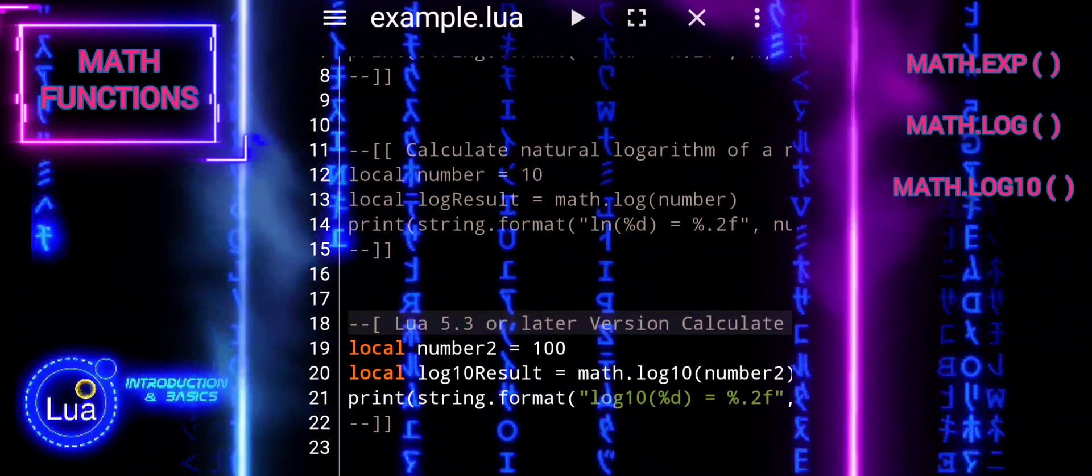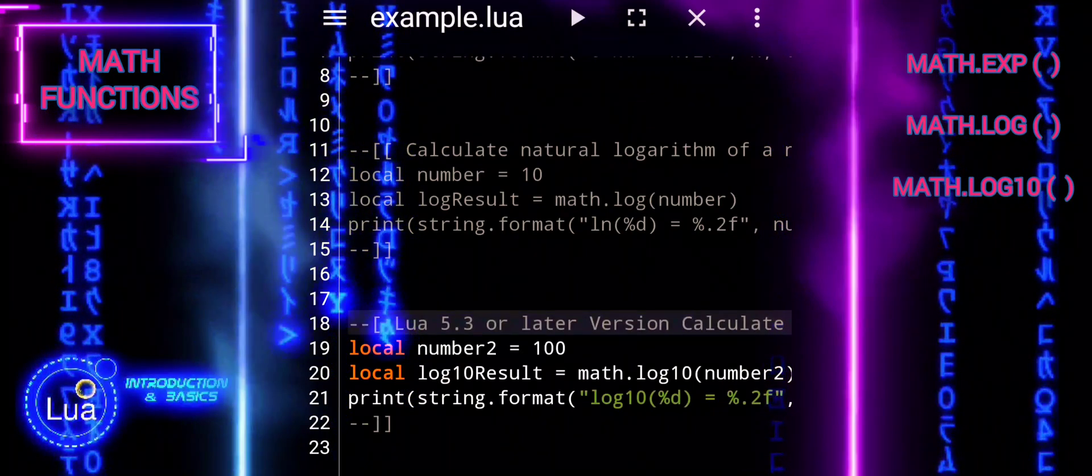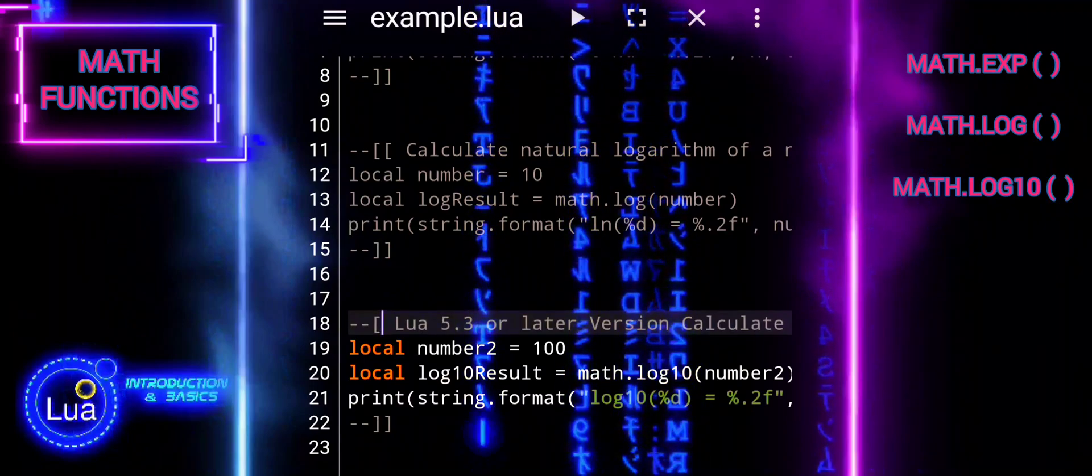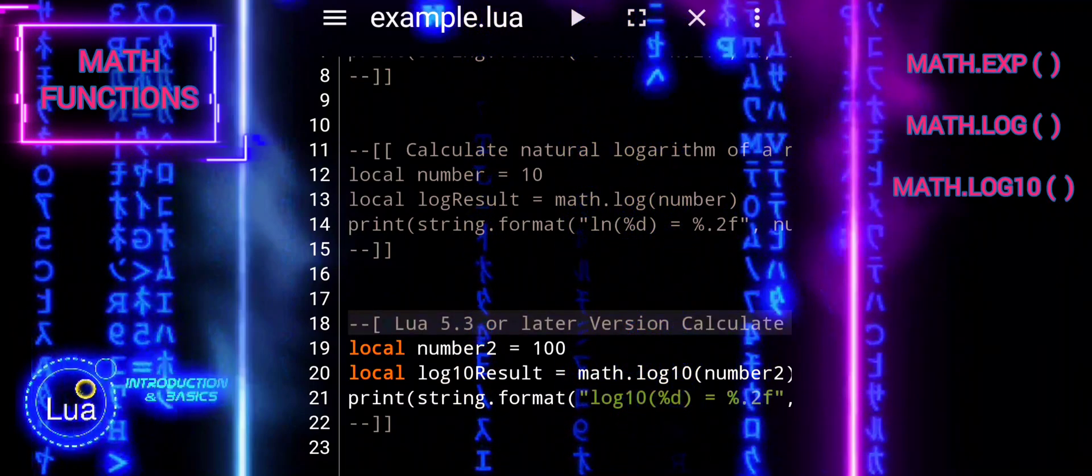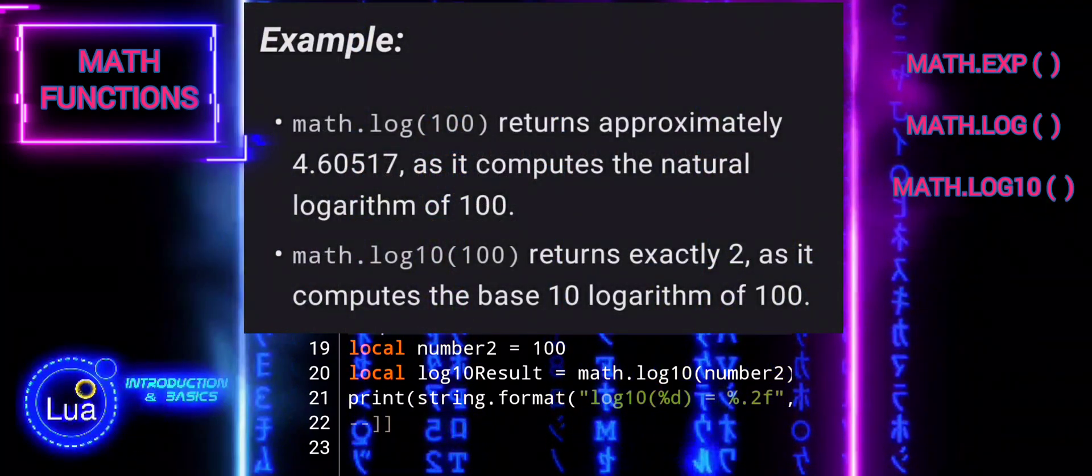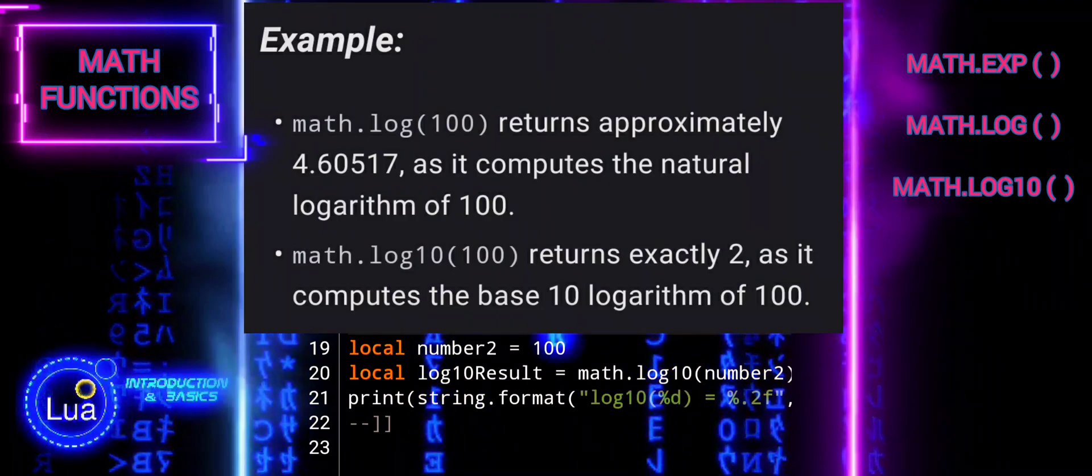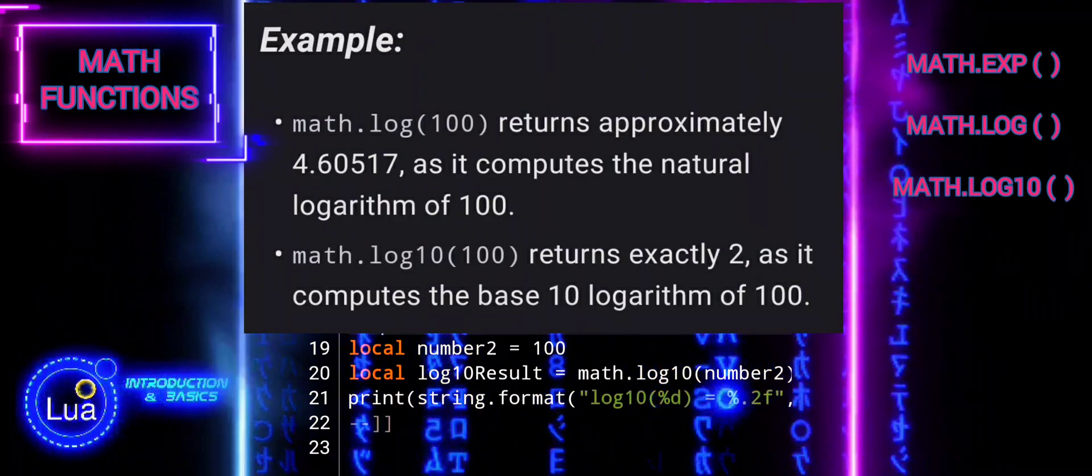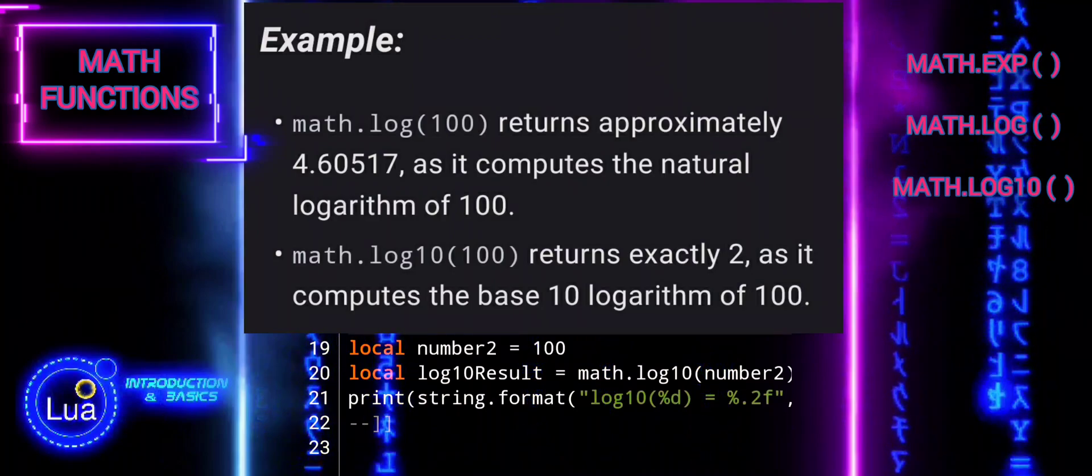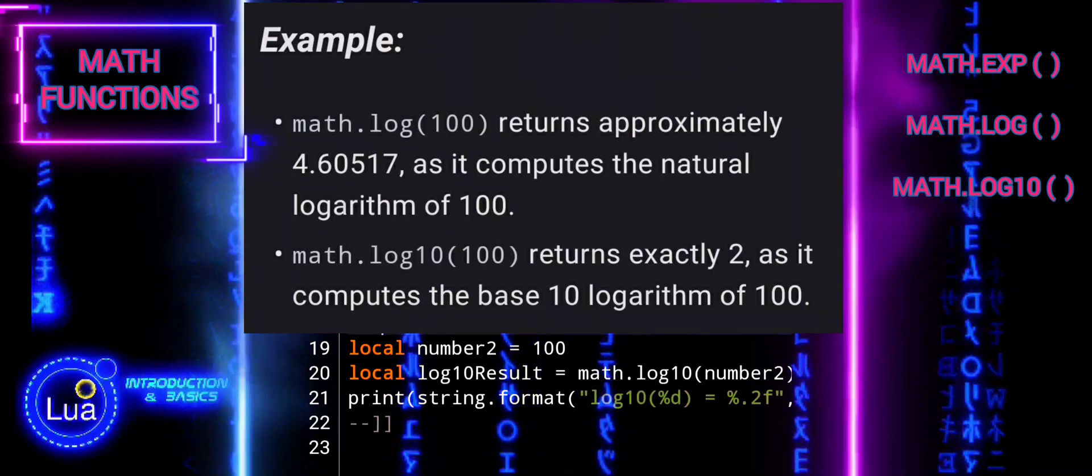The main difference between the two functions lies in the base of the logarithm they compute. Math.log with argument 100 returns approximately 4.605, as it computes the natural logarithm of 100. Math.log10 with argument 100 returns exactly 2, as it computes the base 10 logarithm of 100.